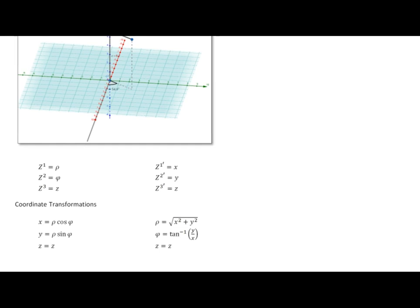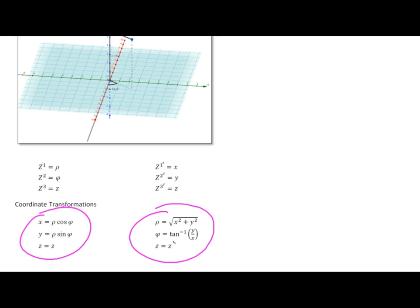So again, this is the result for cylindrical polar coordinates. We have x, y, and z as functions of rho, phi, and z; and rho, phi, and z as functions of x, y, and z. That's what we mean by a coordinate transformation.